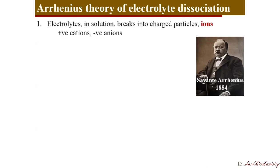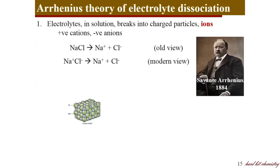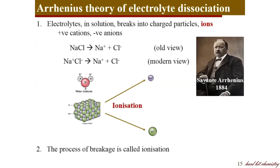According to Arrhenius, electrolytes when put in solution break into charged particles called ions — positive ions are called cations and negative ions are anions. For example, sodium chloride: at Arrhenius's time the view was that a sodium chloride crystal when put in water undergoes ionization to form sodium and chloride ions. Now, with modern techniques, we know that sodium chloride already consists of sodium and chloride ions in the solid state, and when put in water they just become free. Arrhenius called this process of breakage of molecules to obtain ions 'ionization.'